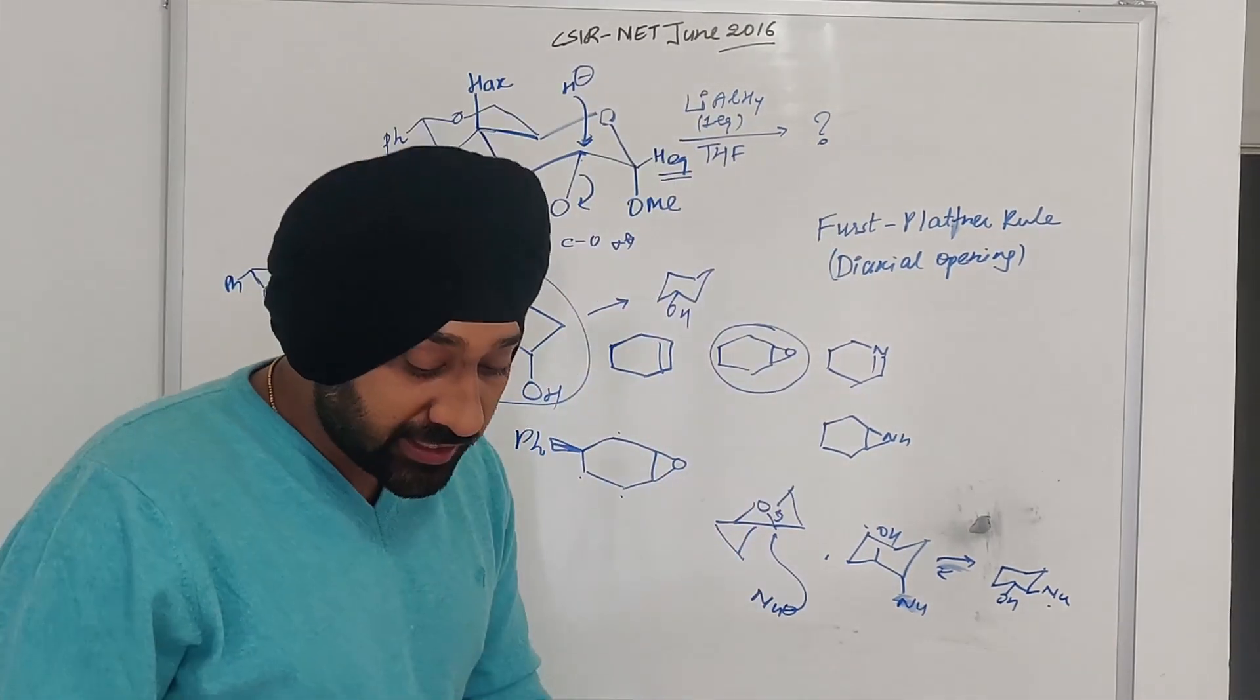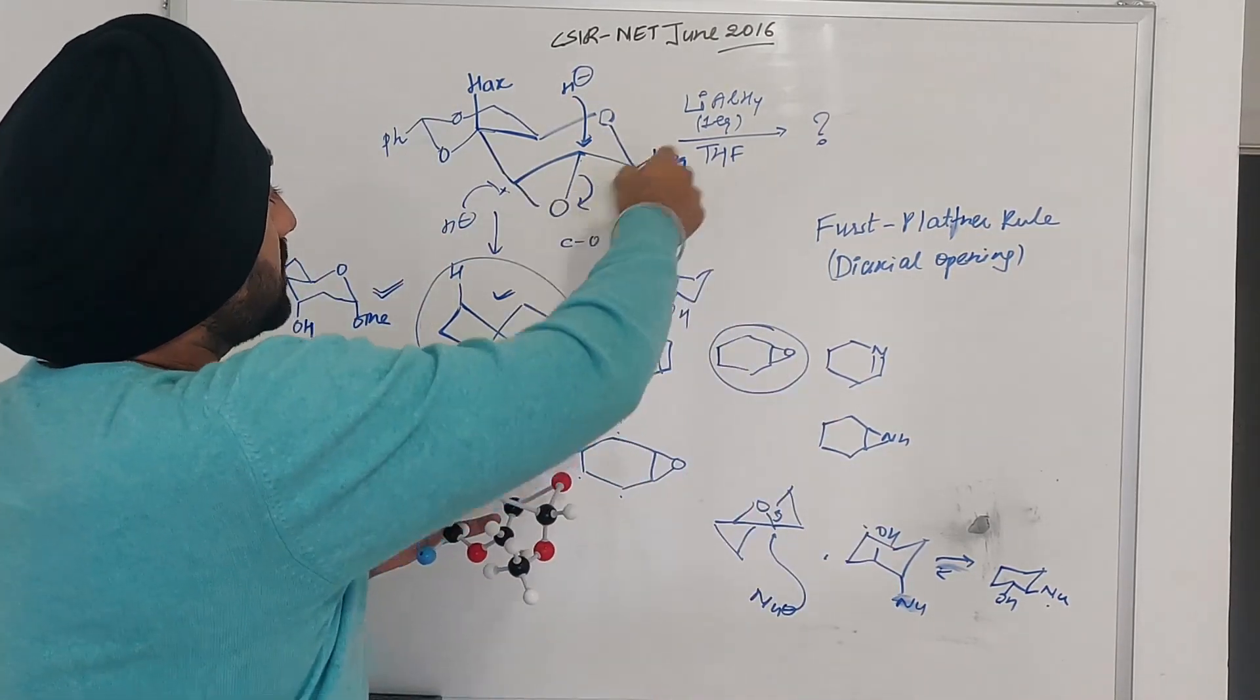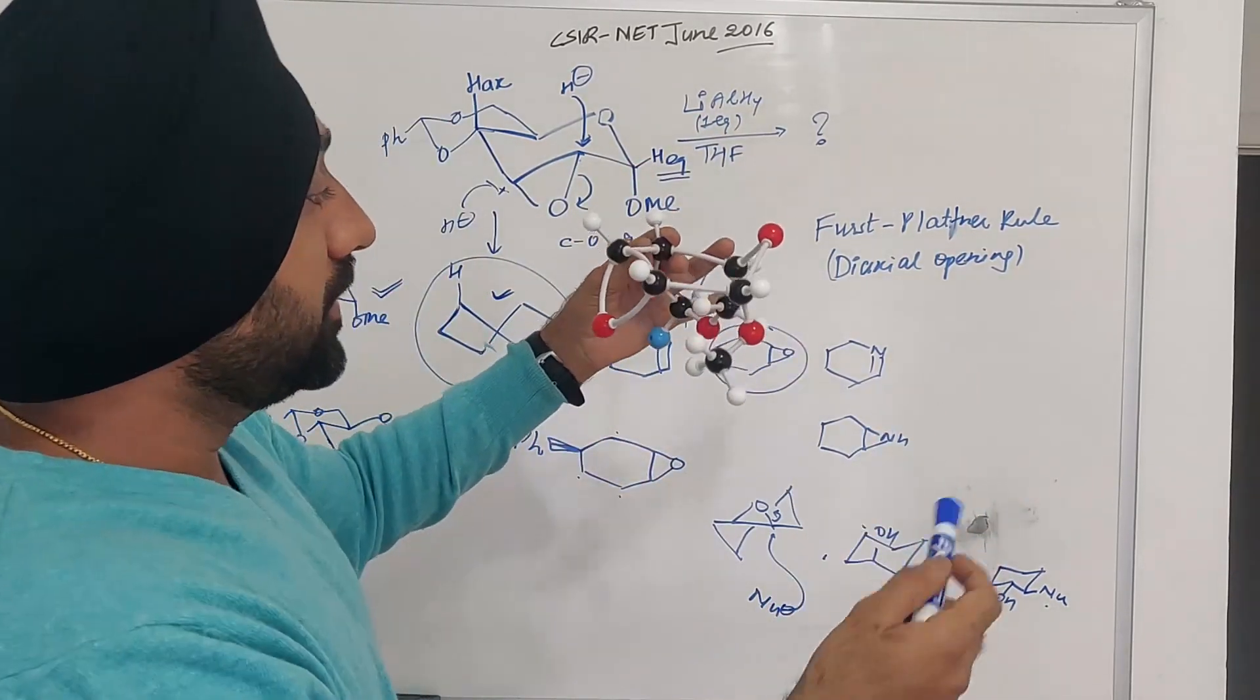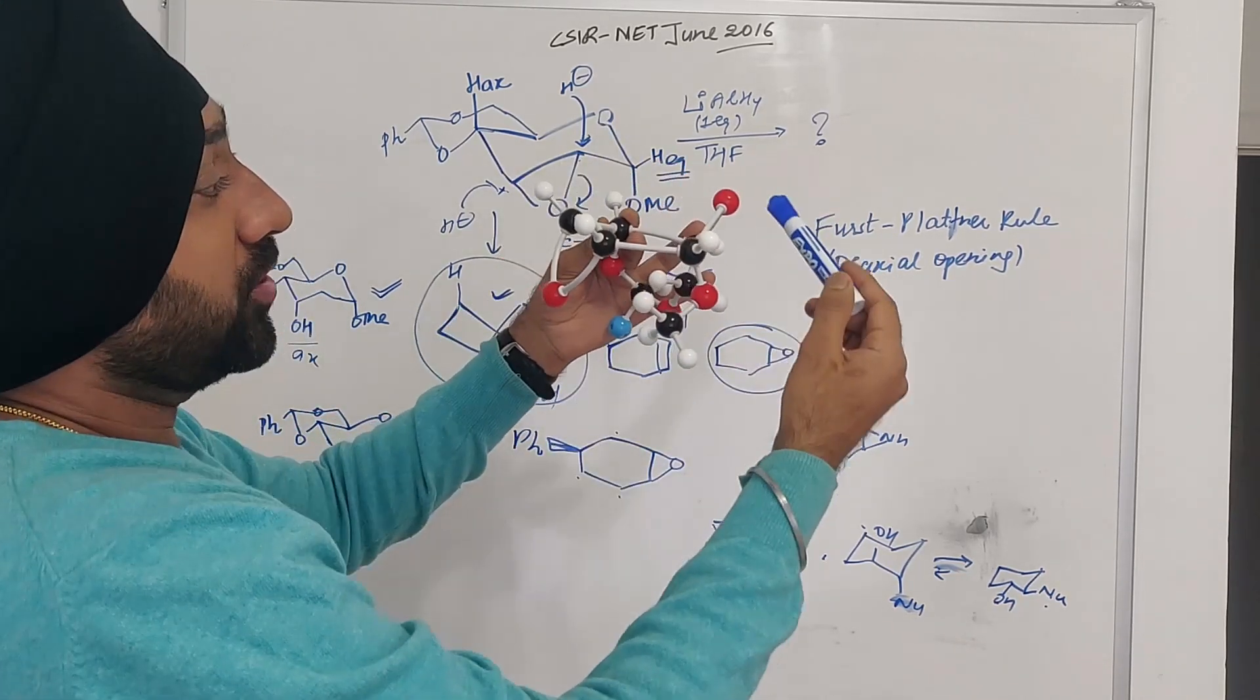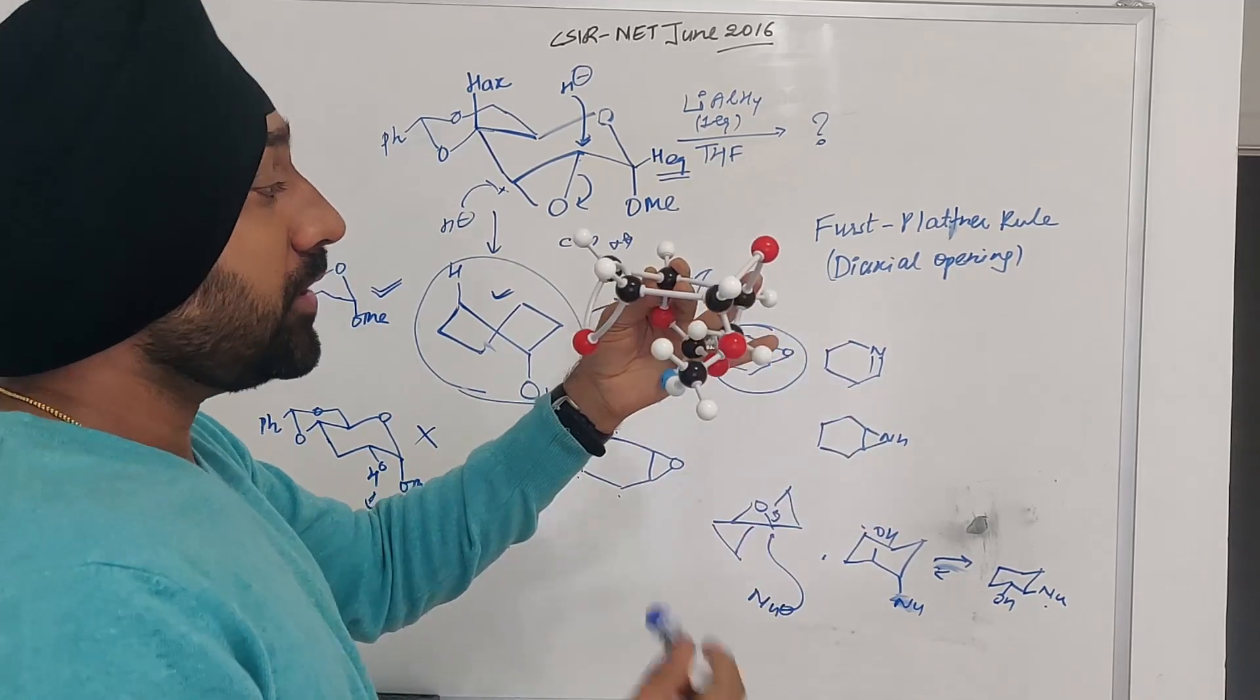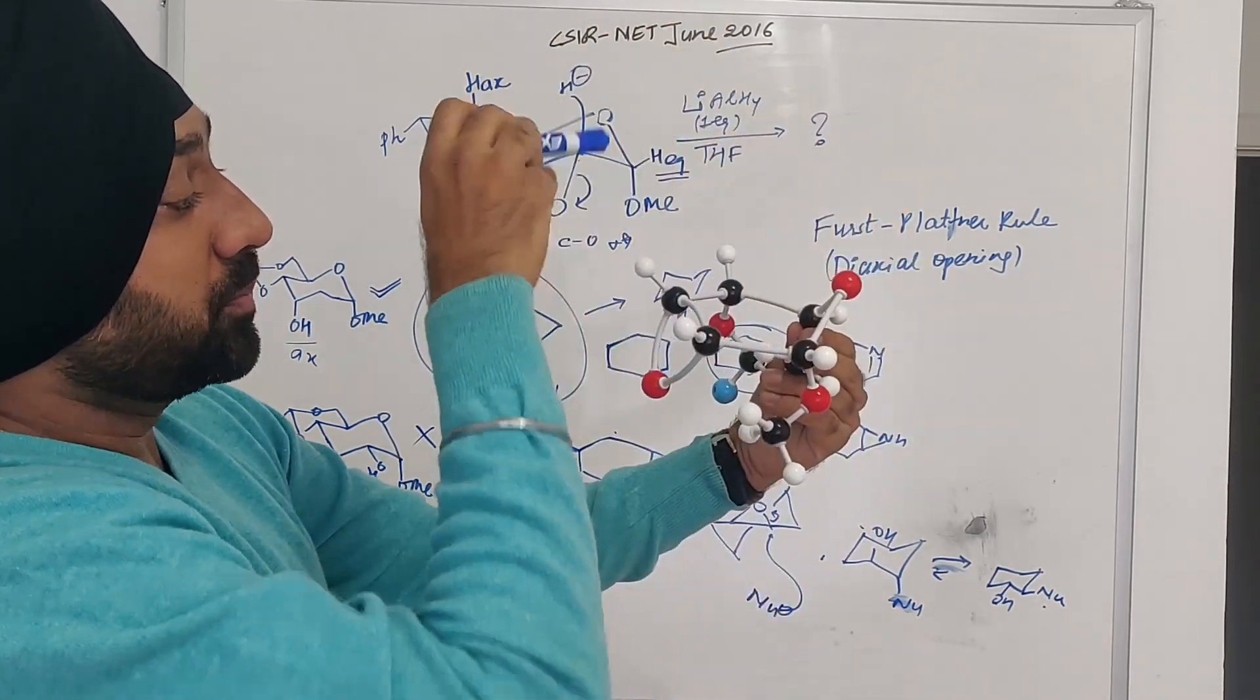Now, quickly, I will show you the molecular model, because you will understand it. I love molecular models. This particular molecule, oxygen is in red and this blue is phenyl. This is the oxygen methoxy group. One hydrogen atom is in axial position, another hydrogen atom in equatorial position. And of course we have the epoxy oxygen.